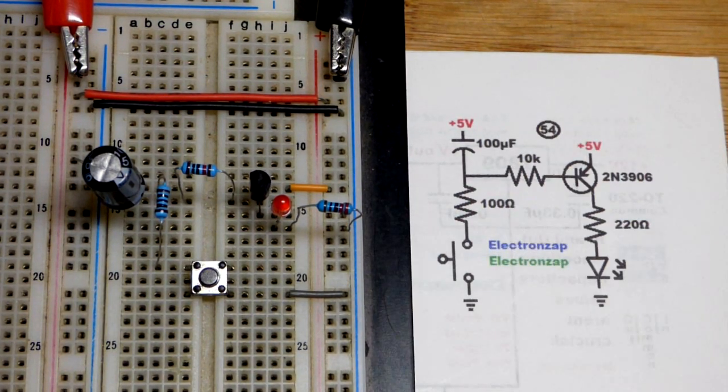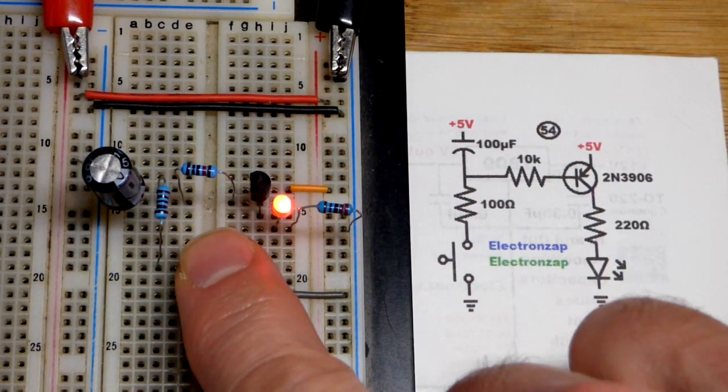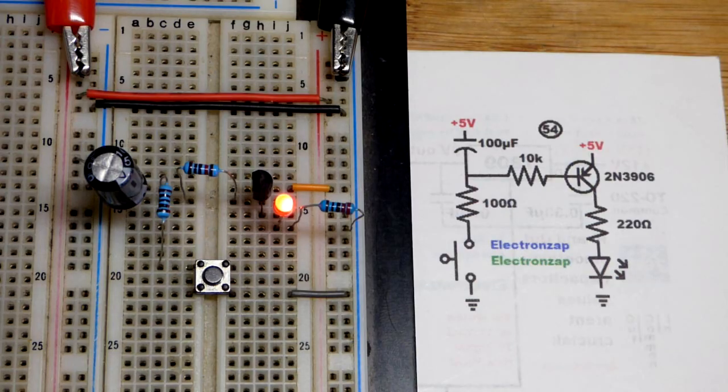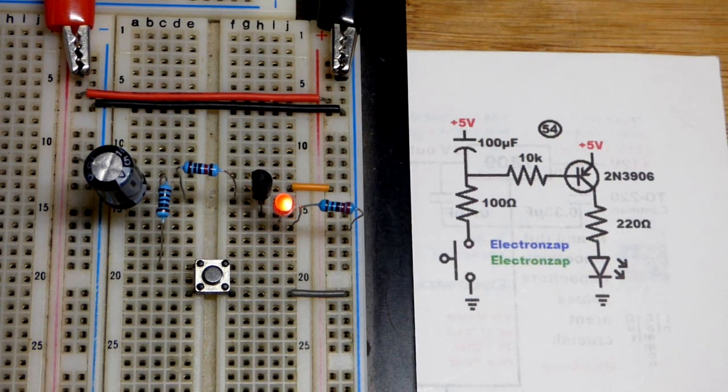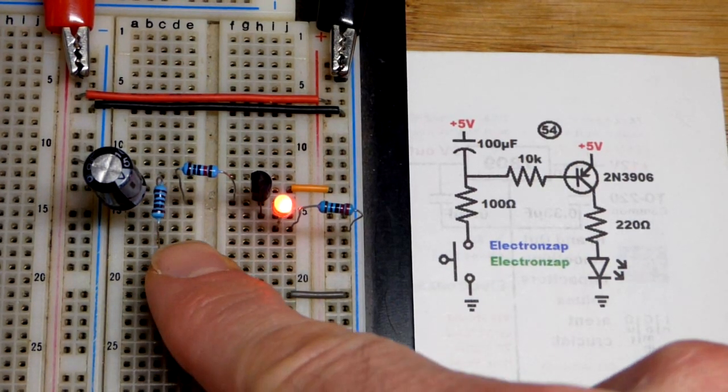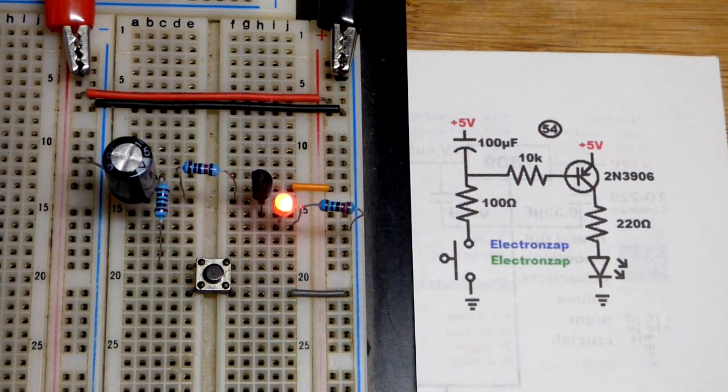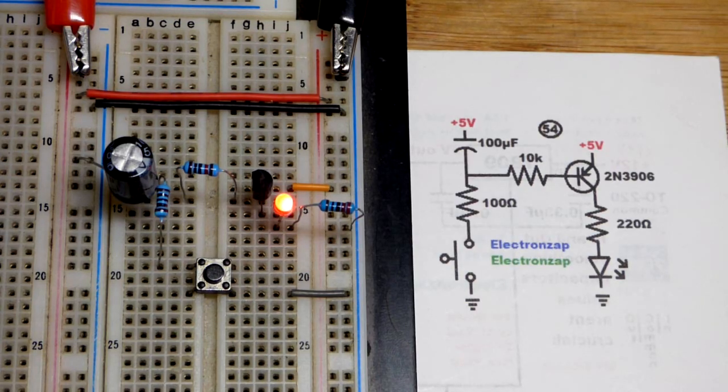Just remember, polarities are opposite when it comes to the PNP bipolar junction transistor versus the NPN bipolar junction transistor. Closing the switch turns on the LED almost instantly, but thanks to the capacitor and the transistor, we have a period of time where the LED will fade off once I remove power from the switch.